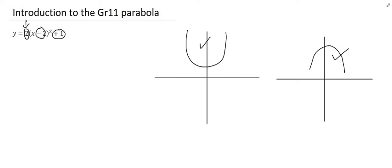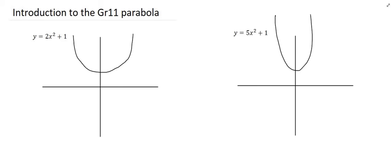The value itself simply tells you whether the arms are far apart or close together. The larger the number in front of x squared, the more narrow the graph is, or the closer the arms are together. You don't have to worry too much about what that number does in terms of exact width — it's just out of interest.